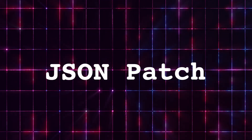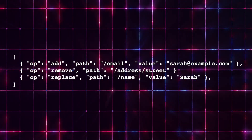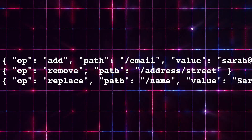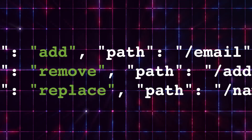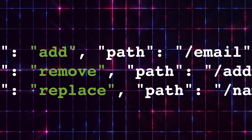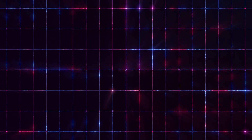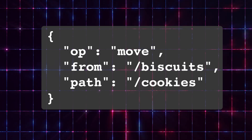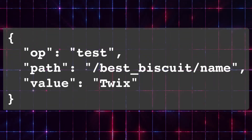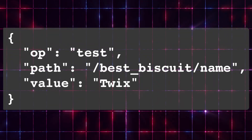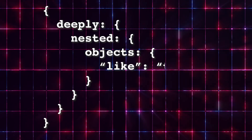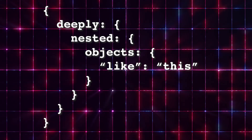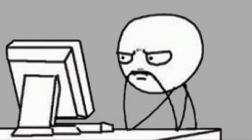First up, JSON Patch. This method is operation-based and includes a list of actions like add, remove, or replace for specific fields. It's great for fine control, handling complex operations like moving or testing fields, and is perfect for precise updates in deeply nested objects or arrays, but it can get a bit complex for simple changes.